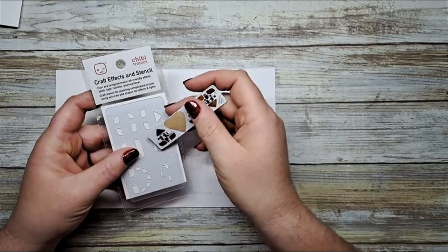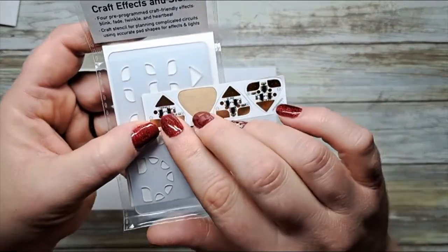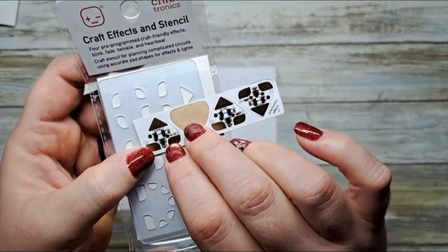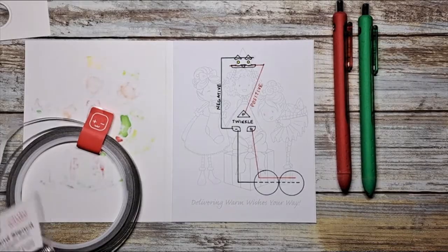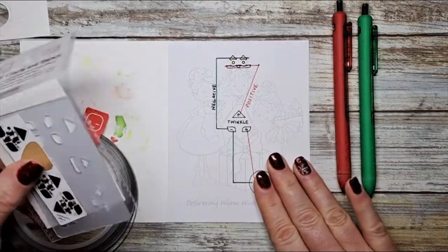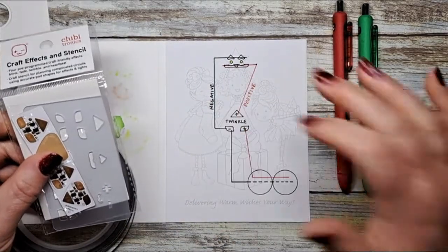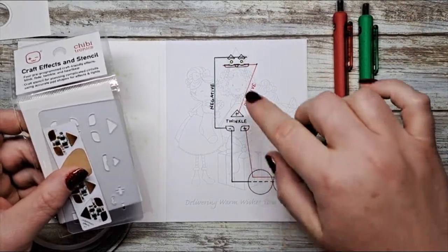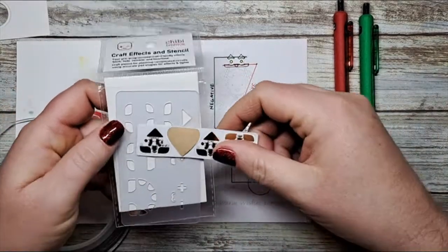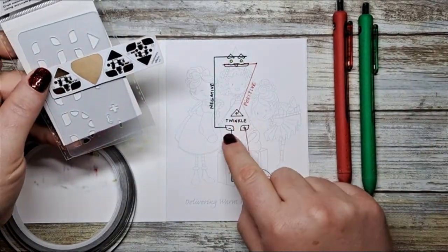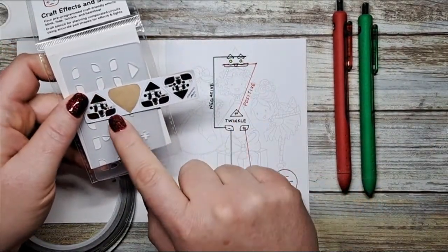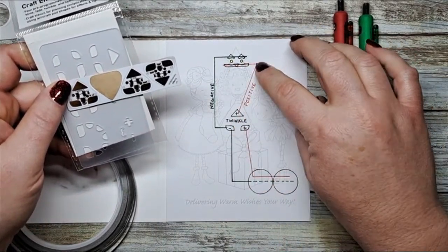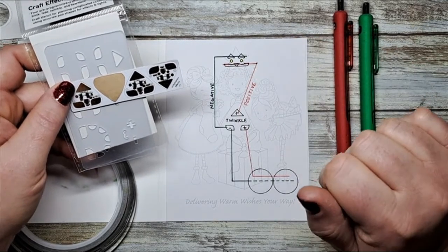We're going to be using CraftFX today and we've got a twinkle sticker. Each of the craft effects stickers are clearly labeled. So now that we've mapped out our circuit and I like to do this because I like a visual and to make sure that all my connections have been made. For the craft effects stickers, positives and negatives are indicated on the sticker so it's easy to connect your positive line to the positive side of your LED stickers.